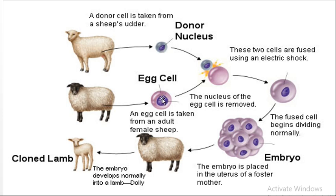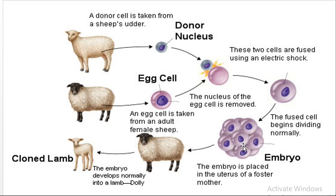We take the nucleus out of the egg cell using ultraviolet radiation, so the egg cell remains but without its nucleus. The donor somatic cell's nucleus is then introduced into this enucleated egg cell. This creates a new fused structure. We then place it into a female womb, where embryo development takes place.